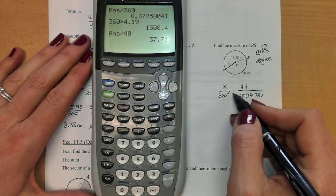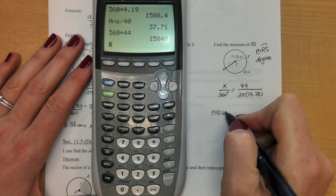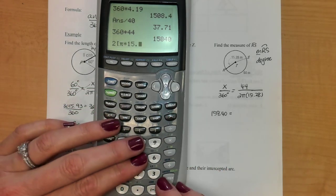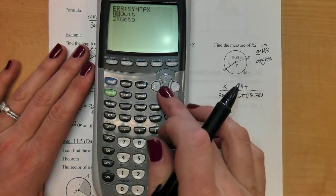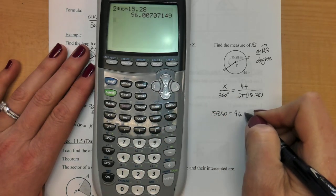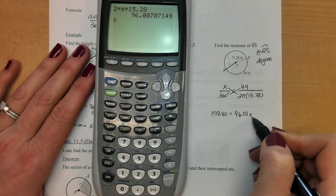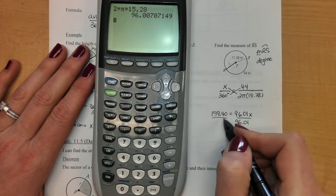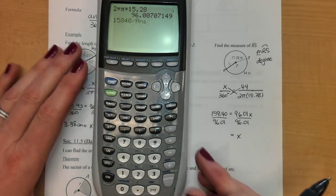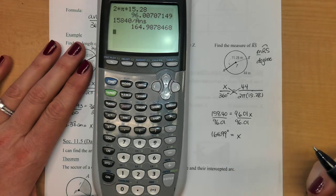So we're going to cross multiply. I'm going to cross multiply 360 and 44, so 15,840. And then on the other side, I've got 2 and π and 15.28. So about 96.01 times x. So I multiplied these two, got that, multiplied these two, got that. And now I just have to divide. And I get about 164.99. And remember, we're finding a degree. So that is an angle measure.